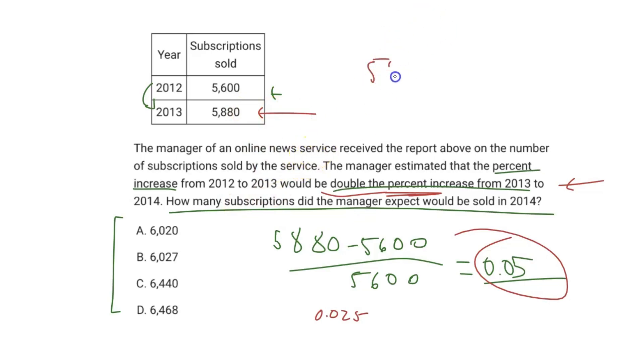I'm going to write 5,880 multiplied by 1.0... let me just make sure I get the decimals right. That's a 2.5% increase so that's going to be 1.025.